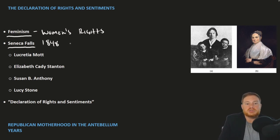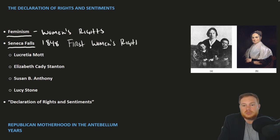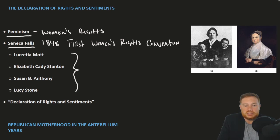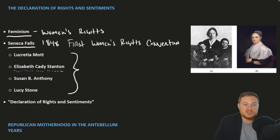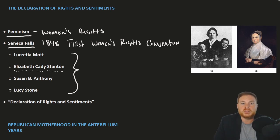1848 is typically understood as the first women's rights convention. It included pioneers of the women's rights movement like Lucretia Mott, Elizabeth Cady Stanton, Susan B. Anthony, and Lucy Stone. The story of Stanton is also a good example of how this movement came out of earlier reforms. She was an abolitionist along with her husband and traveled all the way to London to attend an anti-slavery exposition, and they wouldn't let her in because she was a woman. From that point, she became a women's rights advocate as opposed to an abolitionist advocate.